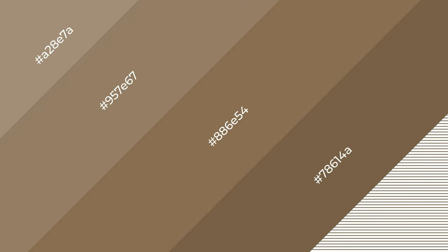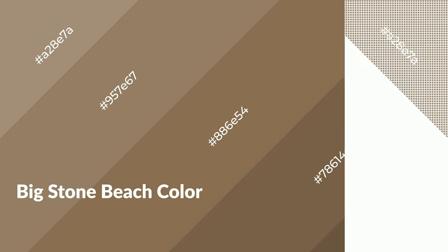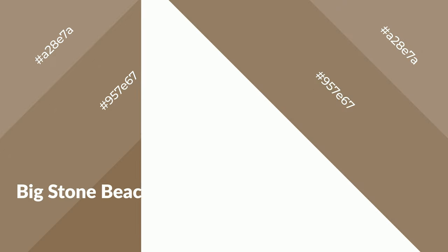To generate shades of a color, we add black to the color. Shades are used in patterns, 3D effects, and layers — they create depth and drama. Big Stone Beach is a warm color and it emits cozier and active emotions. Warm colors are symbols of warmth.